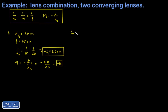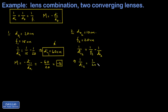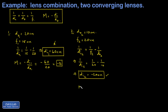Now we take the image from the first lens and run it through the second lens as the object. The lens separation is 70 centimeters, and the first image was 60 centimeters to the right of the first lens, making it 10 centimeters to the left of the second lens. So do2 = 10 centimeters and f2 = 20 centimeters. Applying the thin lens equation: di2 = 1/(1/20 − 1/10), which gives di2 = −20 centimeters — 20 centimeters to the left of lens two. This agrees exactly with our ray diagram.